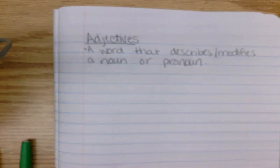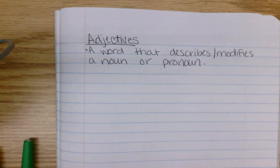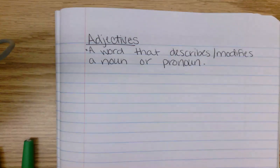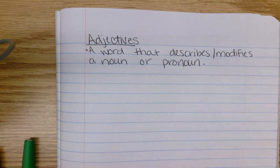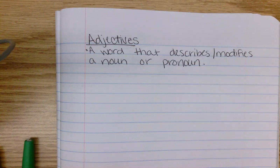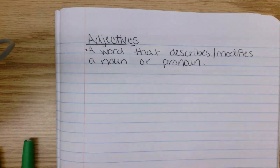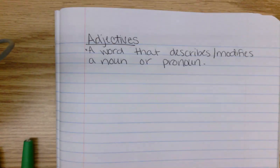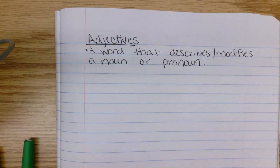So if you just say the word 'book,' your audience is going to get an idea in their head. But if you say 'a long book,' they're going to get a slightly different idea. If you say 'a fantasy book,' that's going to modify what they see in their head when they hear that word.